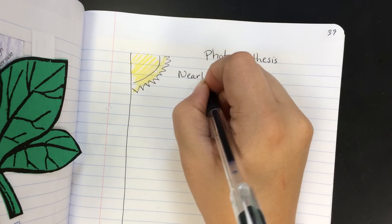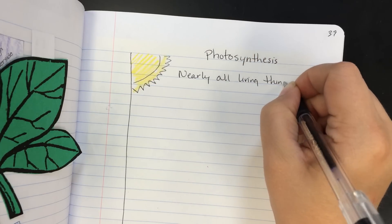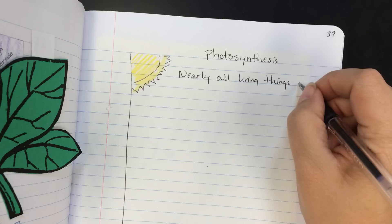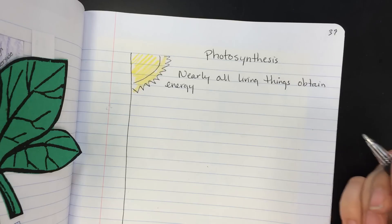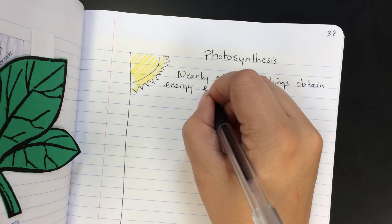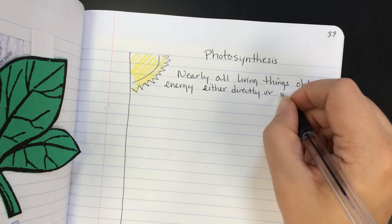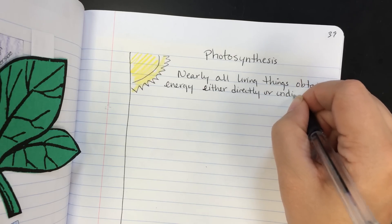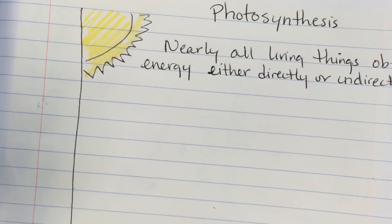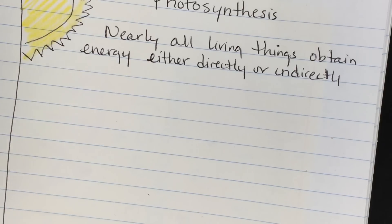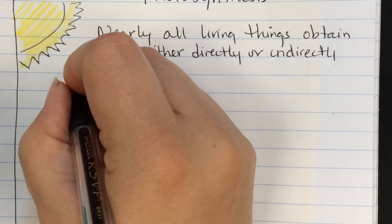So with photosynthesis, nearly all living things obtain energy either directly or indirectly. So that means they either get it straight from it or through another source. I'm going to zoom in on this a little bit so you can see it better. Nearly all living things obtain energy either directly or indirectly from the sun's energy.